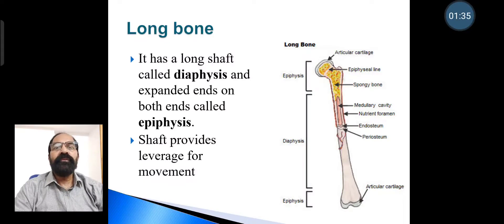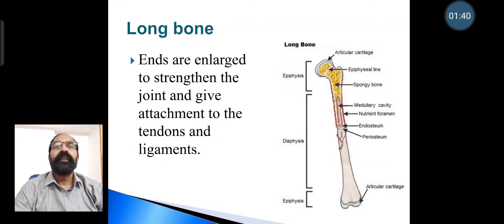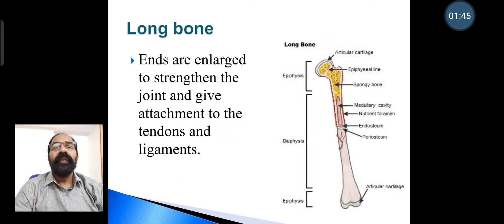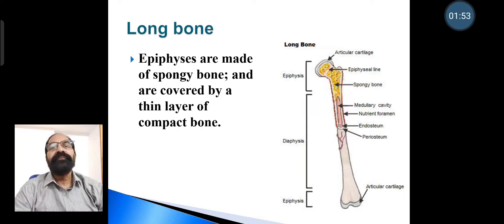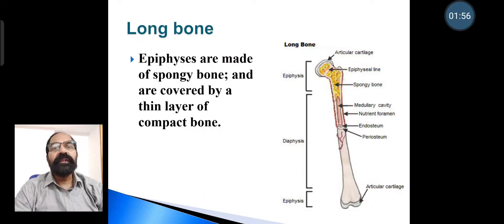The shaft provides leverage for movement. The ends are enlarged to strengthen the joint and give attachment to the tendons and ligaments of the joint. The epiphysis are made of spongy bone and are covered by a thin layer of compact bone.